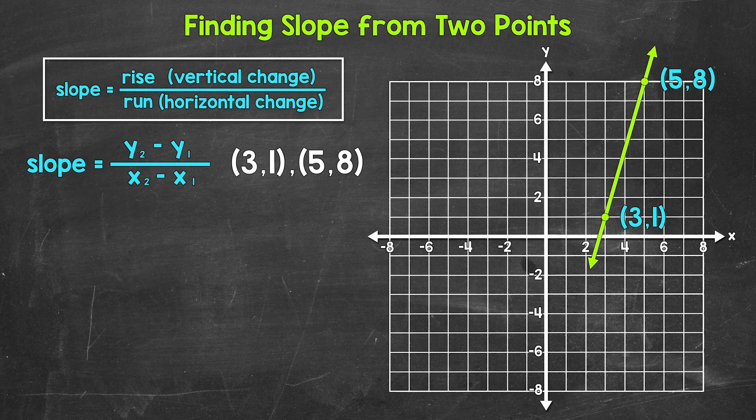Now remember, slope measures the steepness of a line, so how much a line goes up or down as it moves from left to right. Slope equals rise over run, so the vertical change over the horizontal change. In previous videos, we found slope by counting units, so we just counted how far up or down and then how far over we went between points.